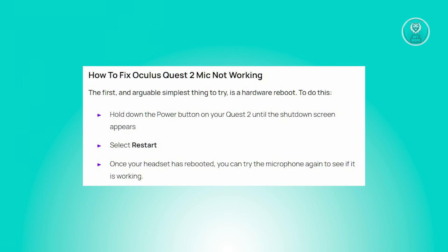Scroll down to allow apps to access your microphone and toggle the button on. Further down, locate allow desktop apps to access your microphone and ensure that it's also switched on.